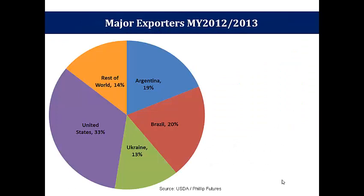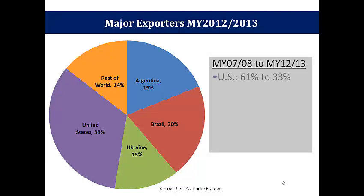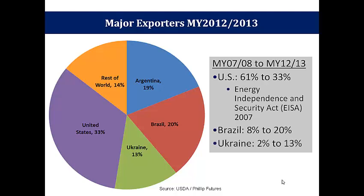Export supply is dominated by four major exporters: US, Brazil, Argentina and Ukraine. Just five years ago, the pie chart would have looked very different. US exports as a percentage of global exports was almost twice as much as current levels, while Brazil and Ukraine used to account for only 8% and 2% of global exports. The shift in reliance away from the US is due to increasing domestic industrial consumption of corn ethanol since the enactment of the Energy Independence and Security Act of 2007. US corn exports more than halved from 61 million metric tons in 2007 to 31 million metric tons. At the same time, Brazil and Ukraine increased production beyond their self-sufficiency levels.